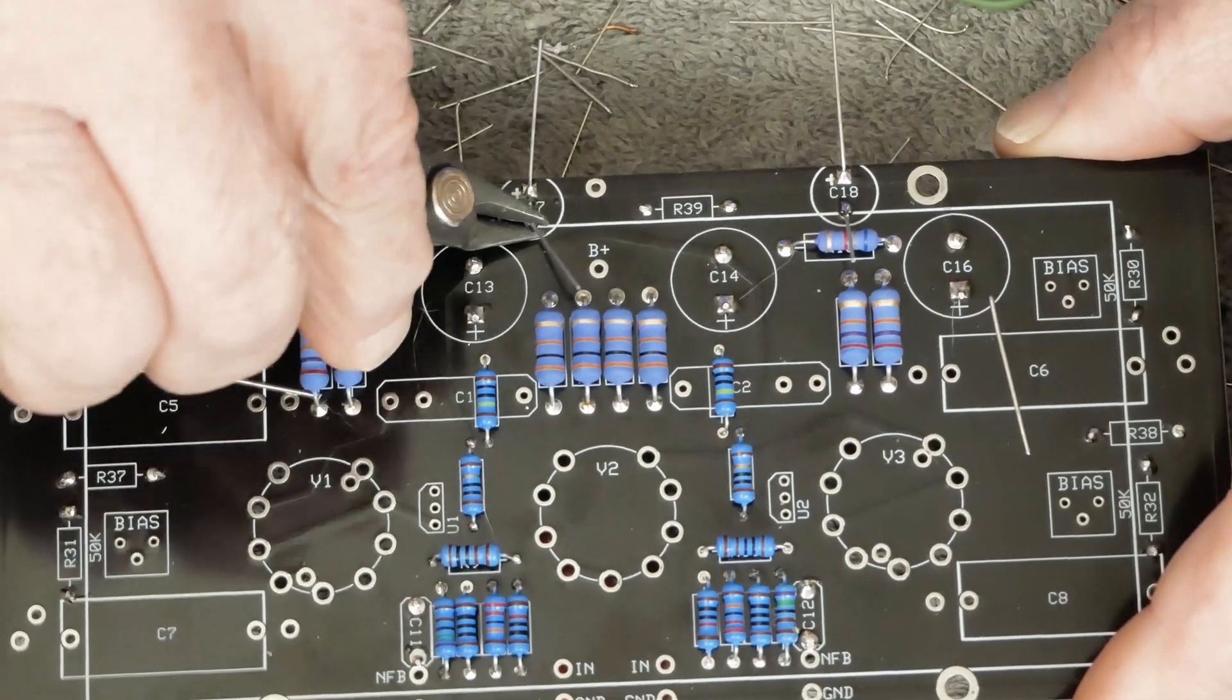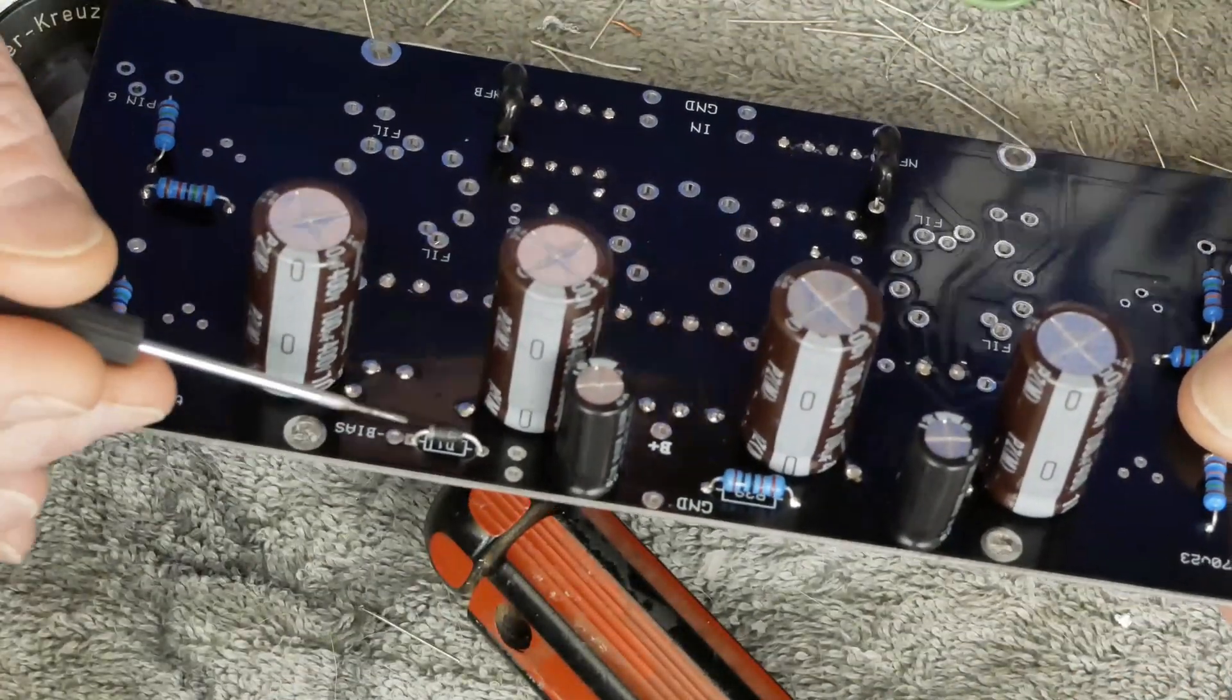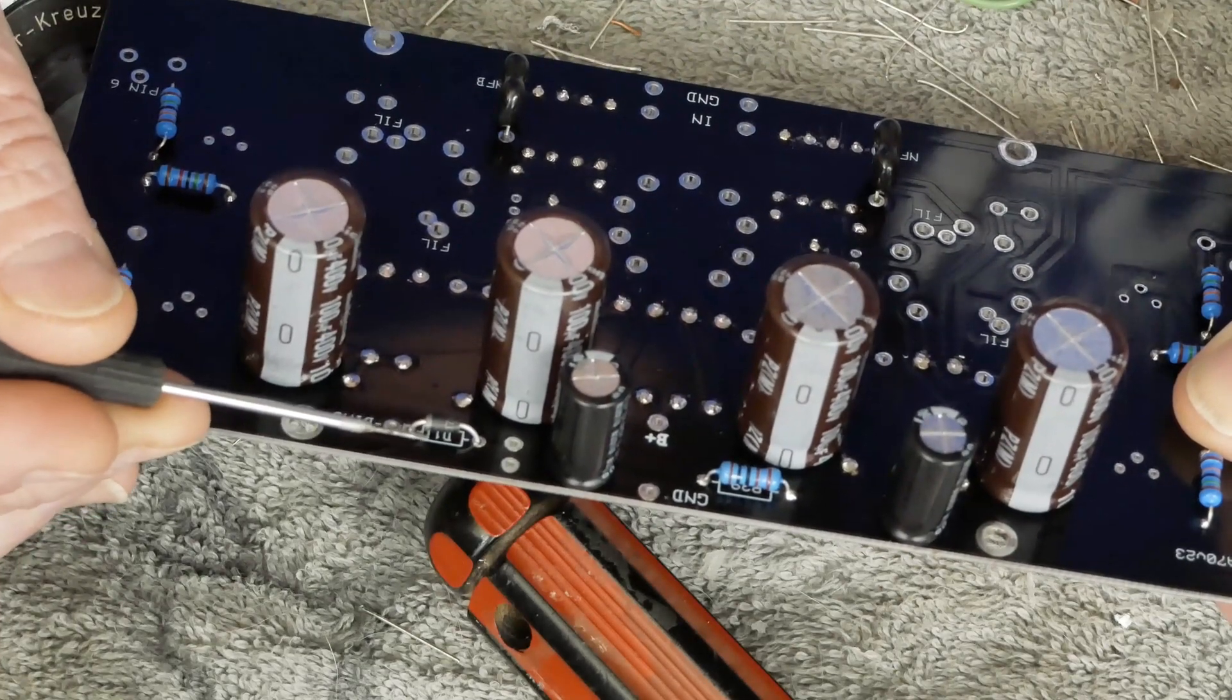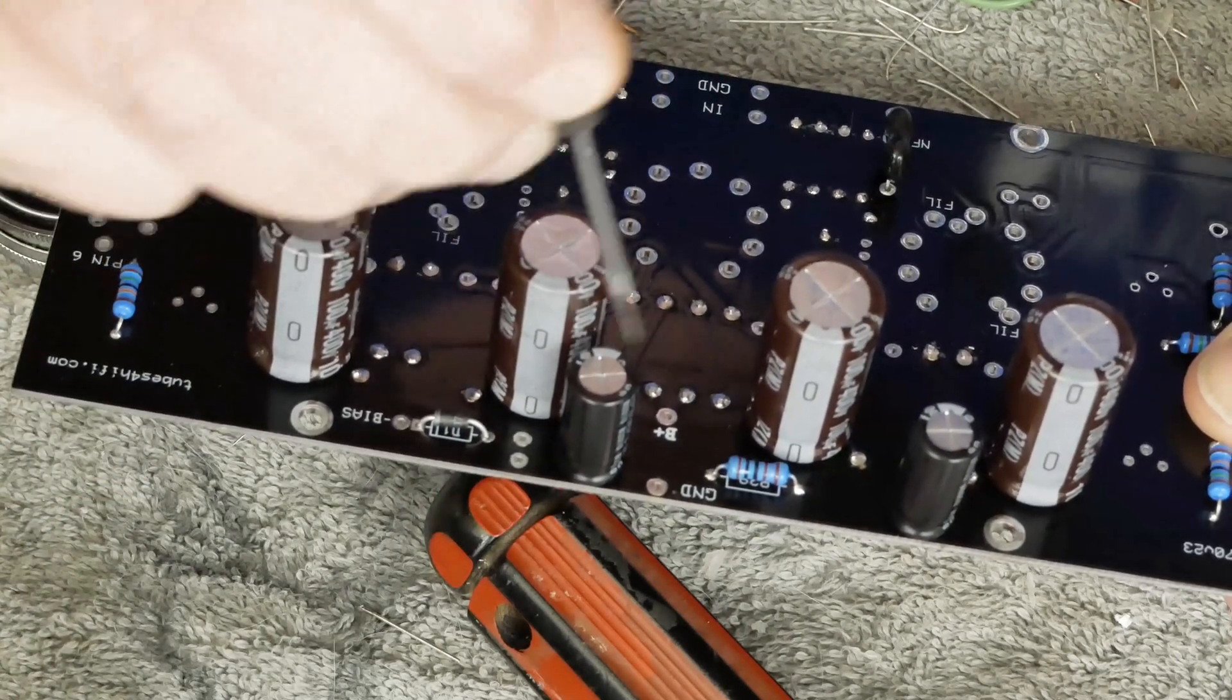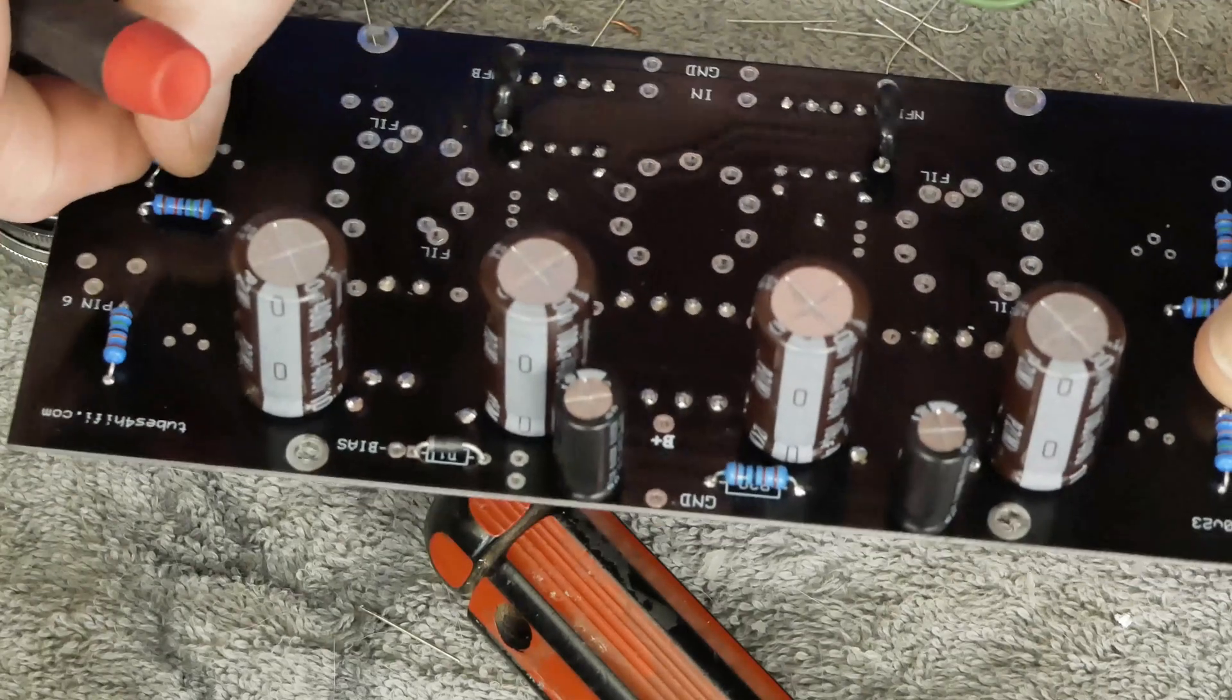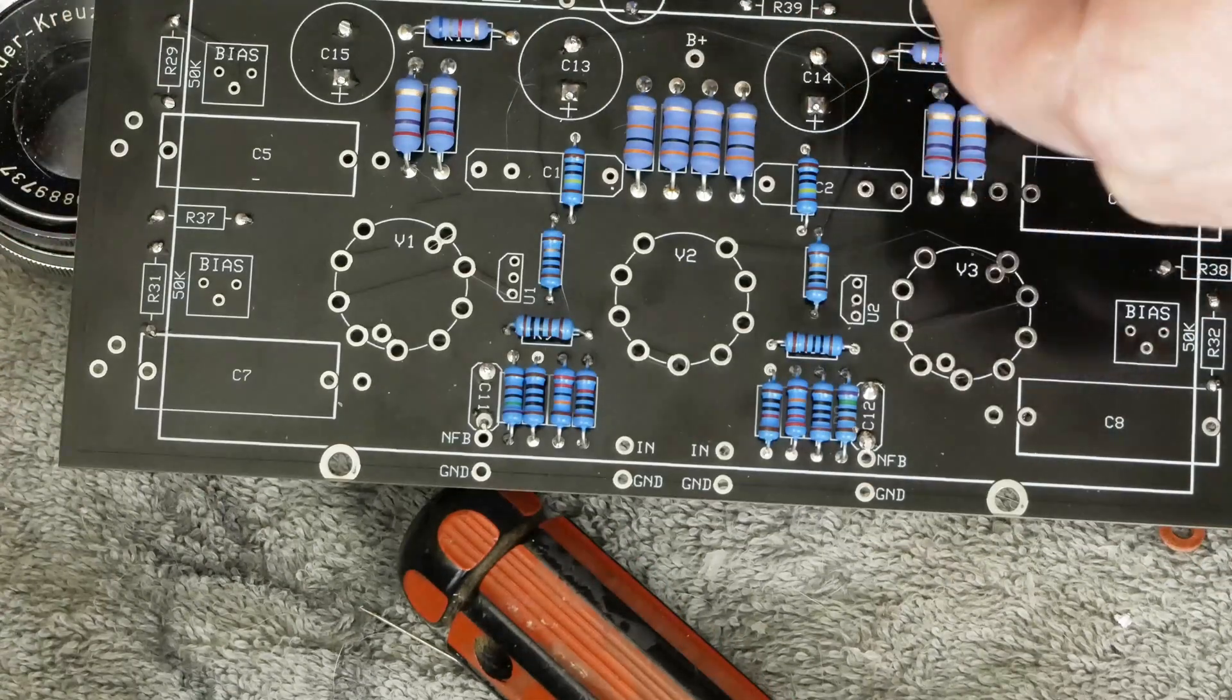Before I solder this diode in, I'm going to show you this as well. Now, you need to make sure that the stripe is oriented with the stripe on the board. If you put it in backwards, it'll be positive bias, it'll blow the caps up, and the tube's red plate, and just all kinds of bad stuff happens. So make sure you put that in the right orientation.